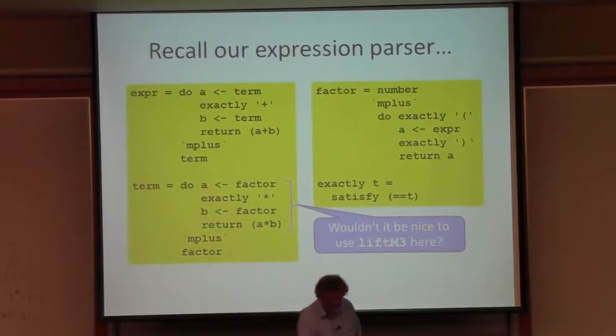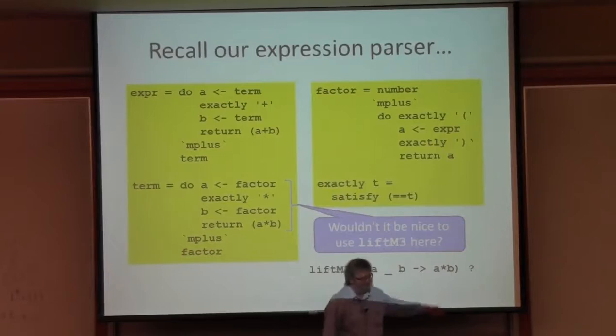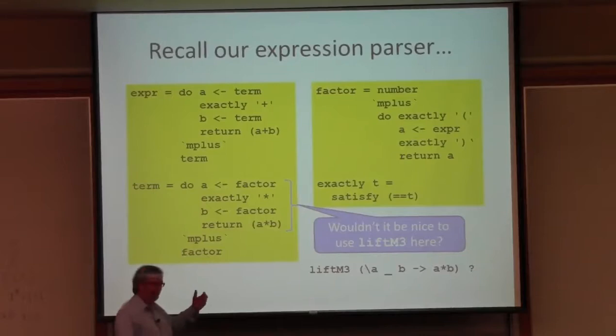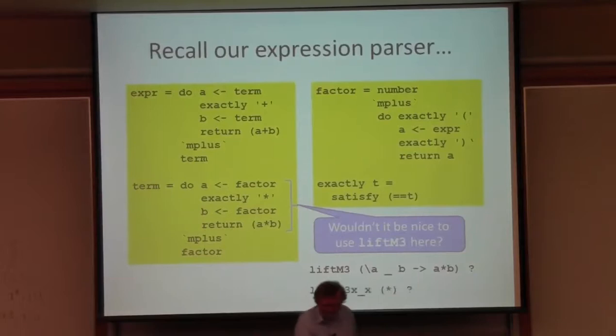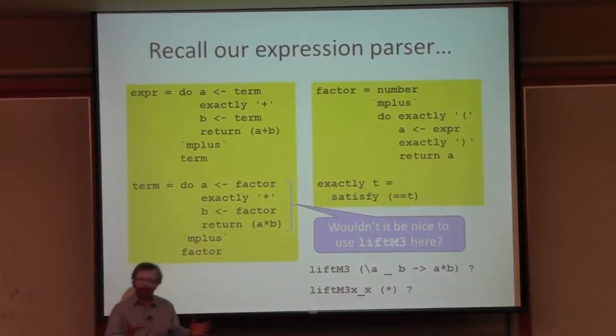Of course I can do that. I have to combine factor, exactly star, and factor with multiplication. So I can use liftM3 and a lambda expression that takes A, throws away the second argument, takes B, and returns A times B. But it's a bit annoying that I have to ignore that second argument. If only liftM3 would do that for me, then I could simply pass the multiplication function.